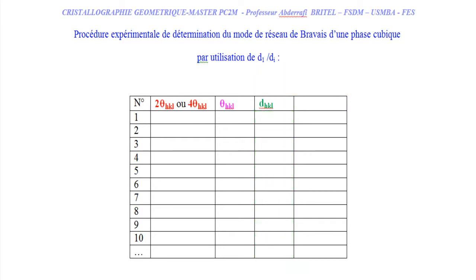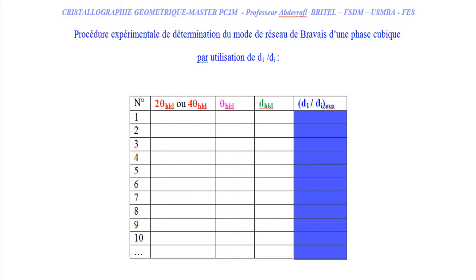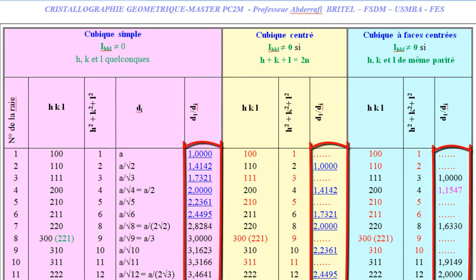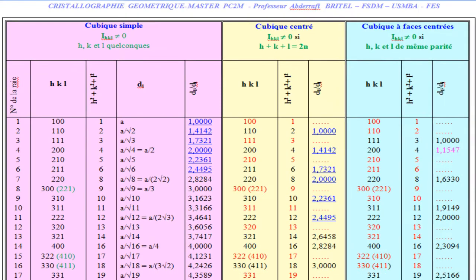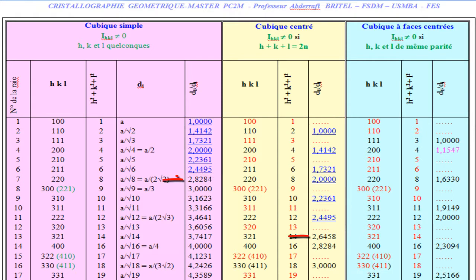We note that if one does not wish to calculate d directly, abacus charts allow access to it from the diffraction angles. Once we have the list of interplanar distances, we calculate the experimental ratios d1/dI. This list is then compared to the characteristic lists for simple cubic, body-centered cubic, and face-centered cubic phases. If the first six values match those of simple or body-centered cubic, the seventh value distinguishes between the two. But if the second value of the ratio d1/dI is around 1.15, the mode is certainly face-centered cubic.